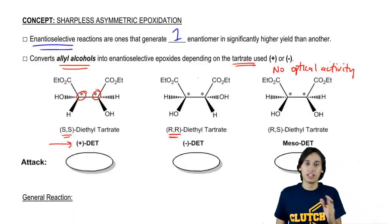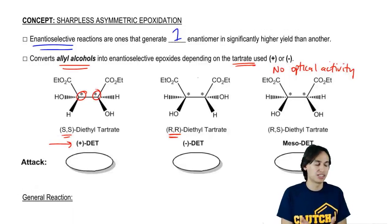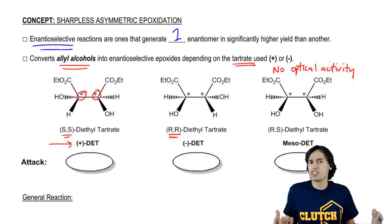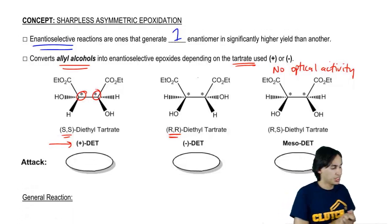This is going back to our chirality chapter where we talked about meso compounds and how they don't rotate plane polarized light. So it's impossible to assign a plus or a minus to a meso because it's not going to rotate at all.